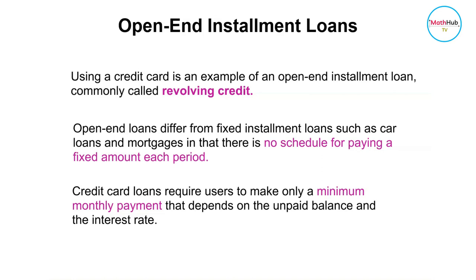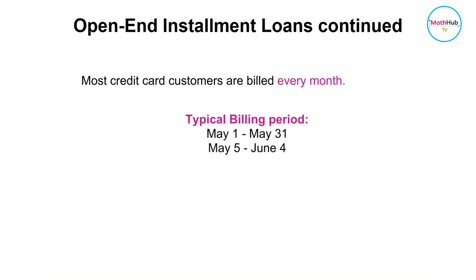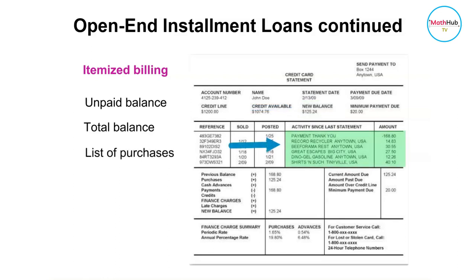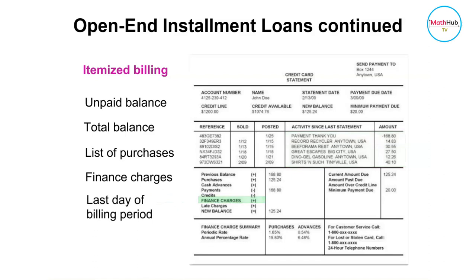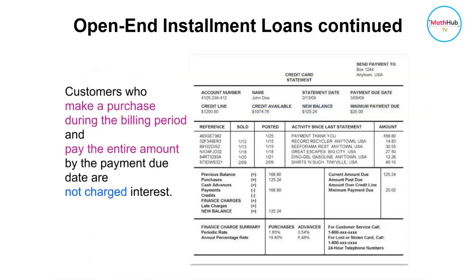Credit card loans require users to only make a minimum monthly payment that depends on the unpaid balance and the interest rate. Most credit card customers are billed every month. A typical billing period is May 1 through May 31. Customers receive a statement called an itemized billing that includes the unpaid balance on the first day, the total balance owed on the last day, a list of purchases and cash advances, any finance charges and other fees, and the payment due date.